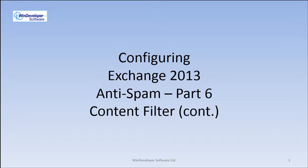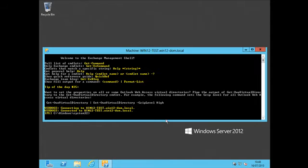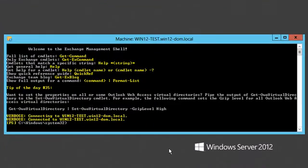In the last video we started discussing the Exchange content filter. We looked at the SCL rating system and configured the filtering thresholds. Today we continue configuring many other options this filter provides. So far we discussed the configuration of global thresholds that apply to all emails.